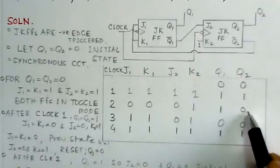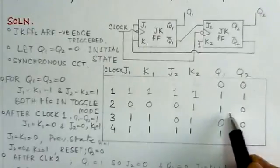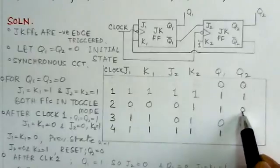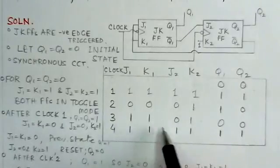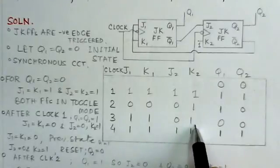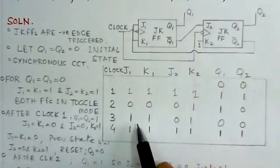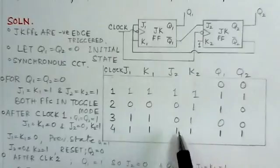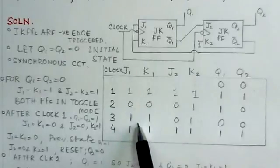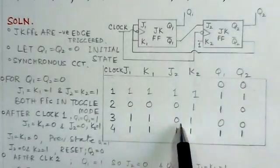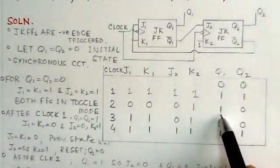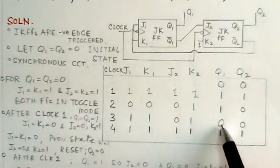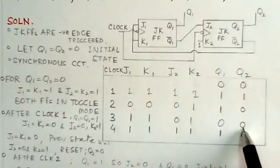Because J1=K1=0, the first flip-flop holds its state, and the second flip-flop goes to reset mode — output becomes 0. So after the second clock pulse, the state is Q1=1, Q2=0. Corresponding to these outputs, the first flip-flop is again in toggle mode and the second is in reset mode, so Q1 toggles from 1 to 0, and Q2 remains 0.